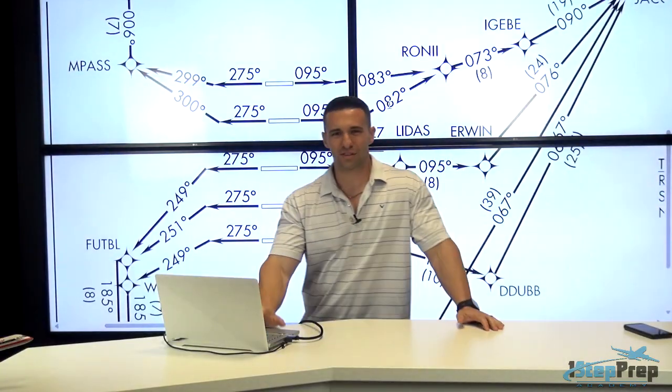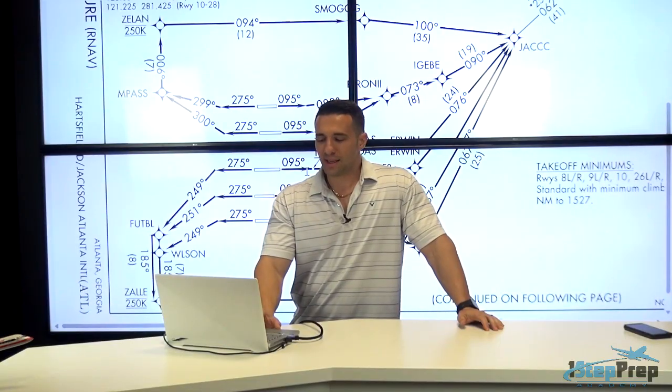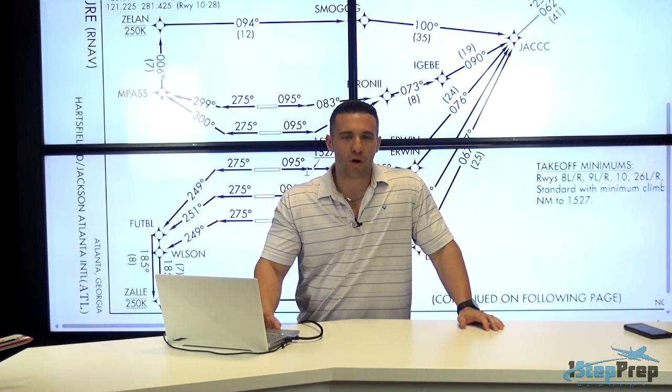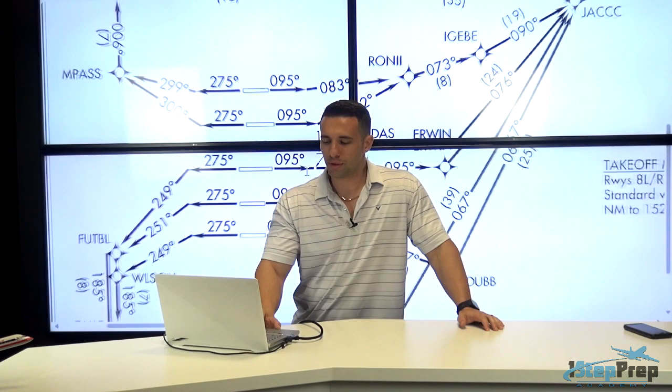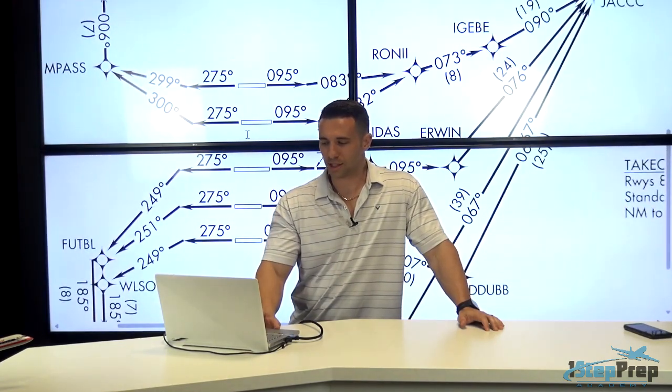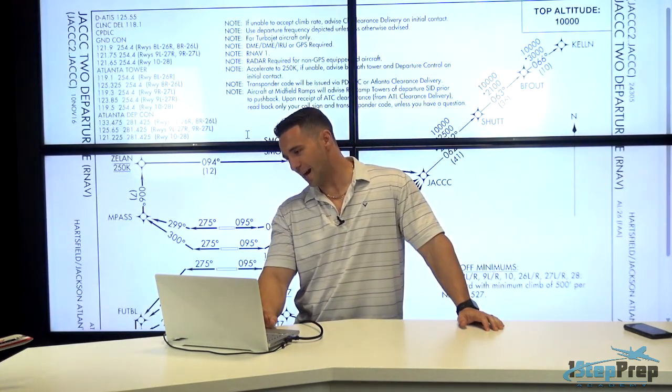Now, why is this so important? Because let's say for a moment that you mistakenly loaded the wrong runway and rather than put 8 right departing, this is the Jack 2 departure.